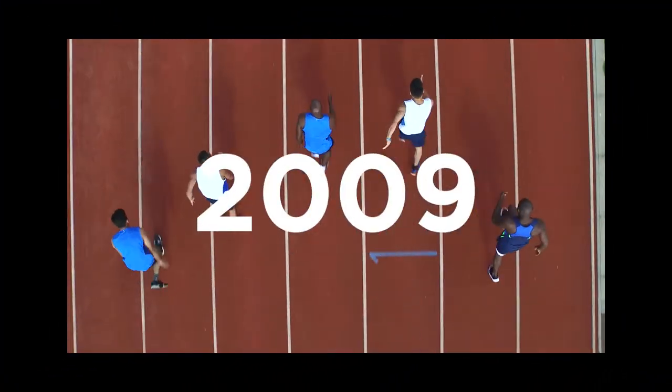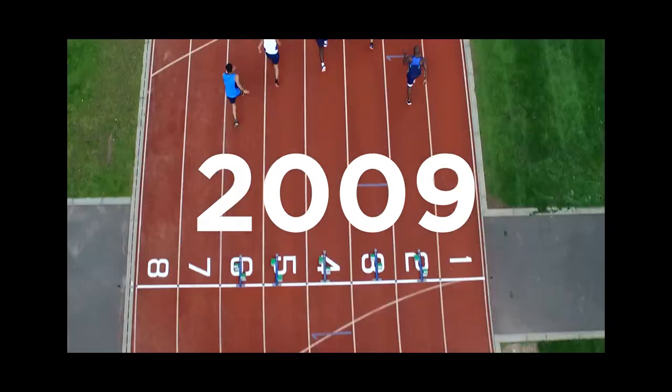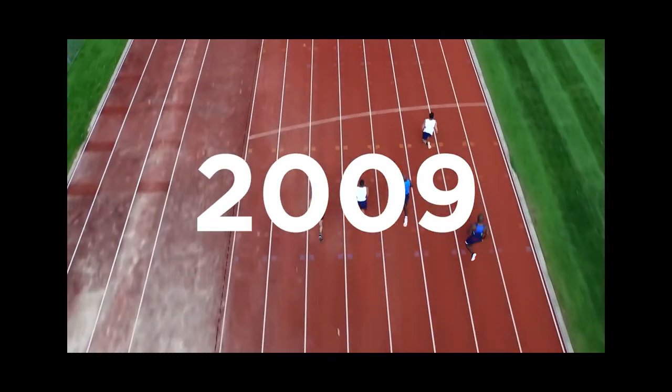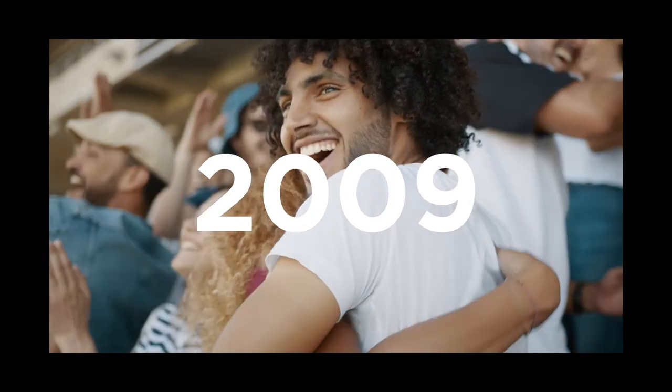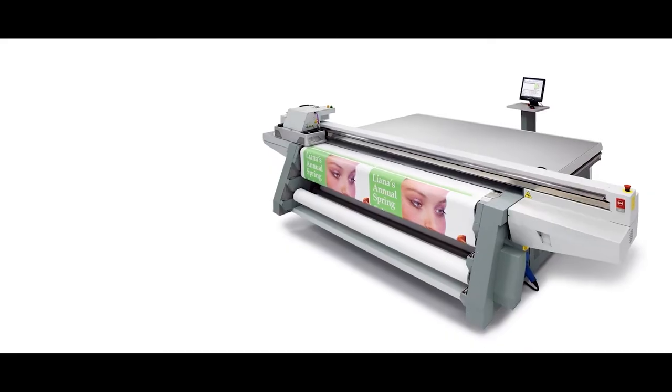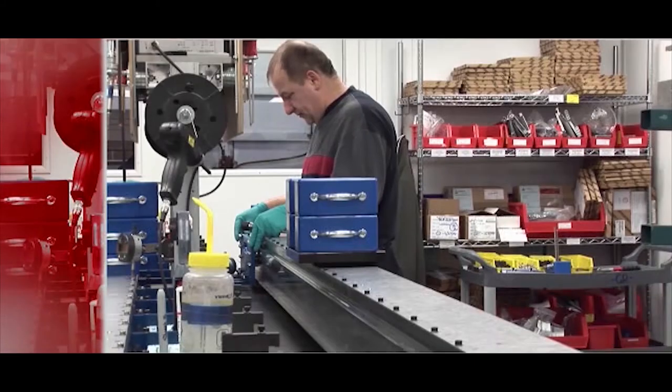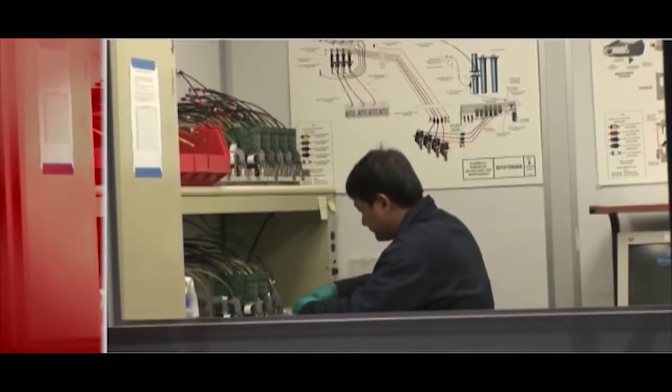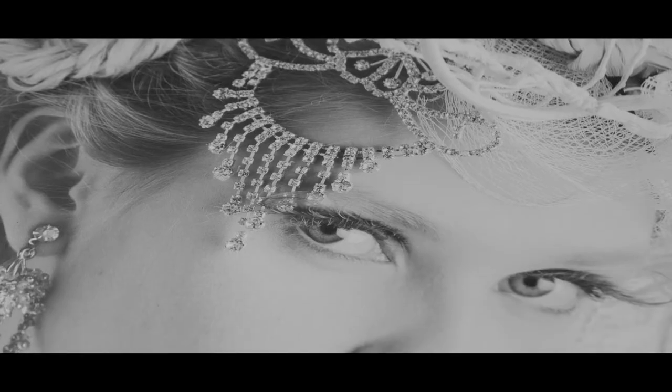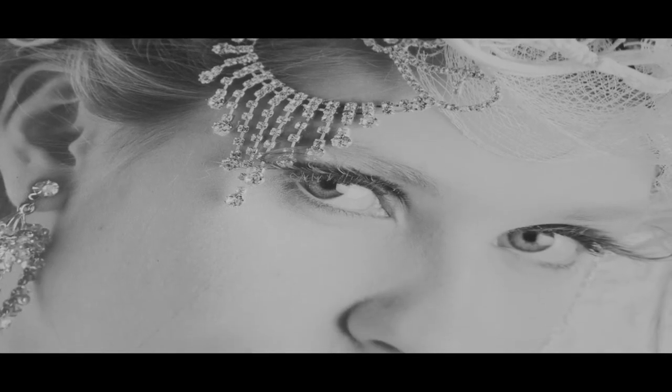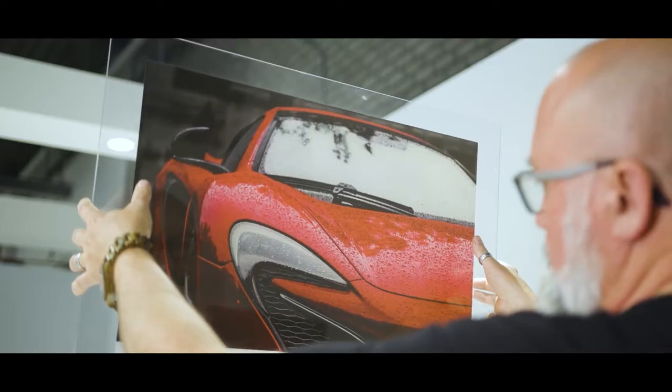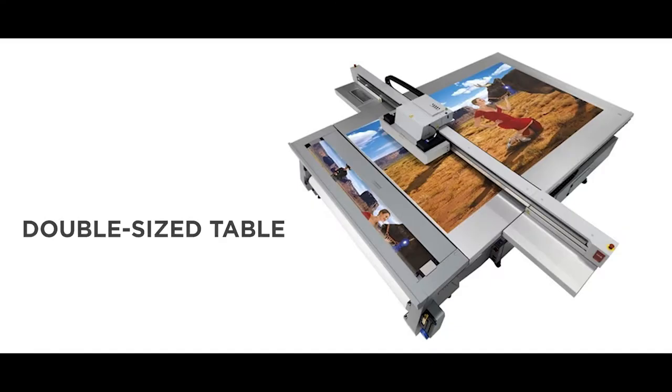Fast forward to 2009, the year the world record for the 100-meter sprint was broken at the world championship in Germany, showing exhilarating speed. The second generation Arizona was introduced with tremendous upgrades such as white ink to unlock new applications, with the ability to print on colored and transparent media. At the same time, the double-sized XT table and dual-row print head architecture were introduced, substantially increasing print speed and useful productivity.